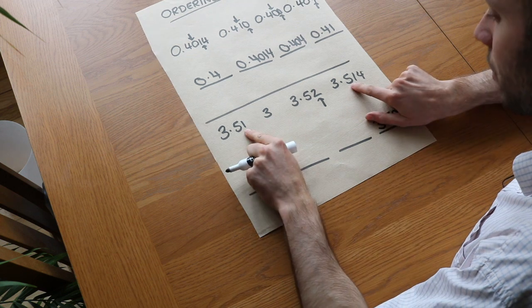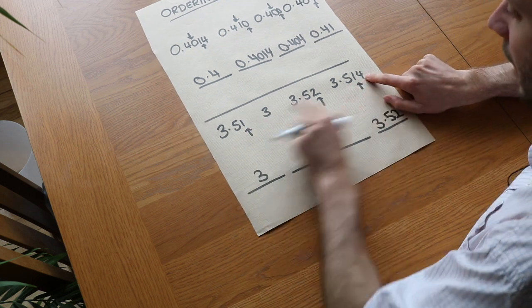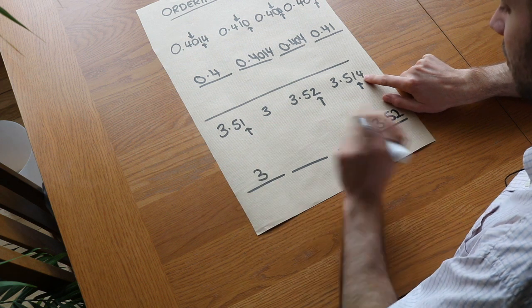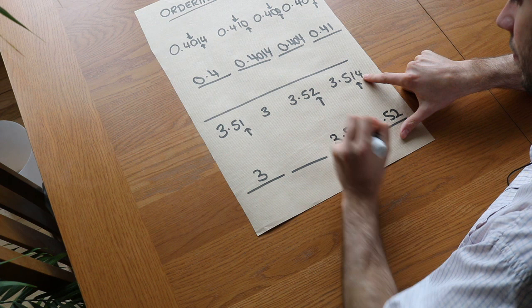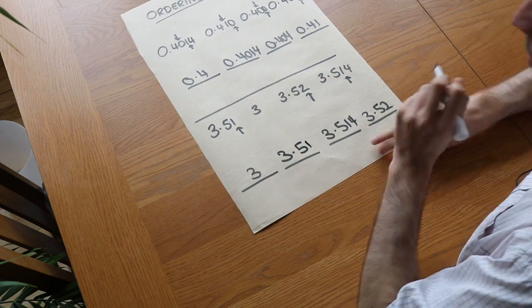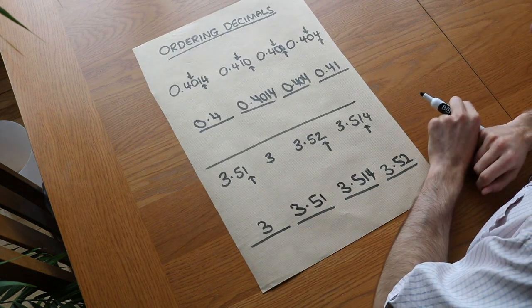Now between these ones, well this has four thousandths on the end but this doesn't have the four thousandth, so we know that this one is going to be larger and that one is a smaller one, and there we go we've managed to put them in ascending order.